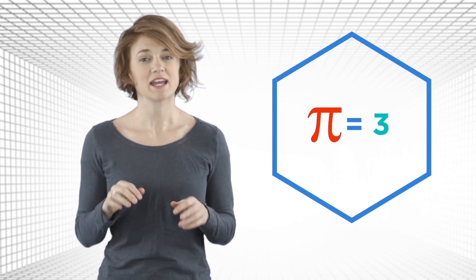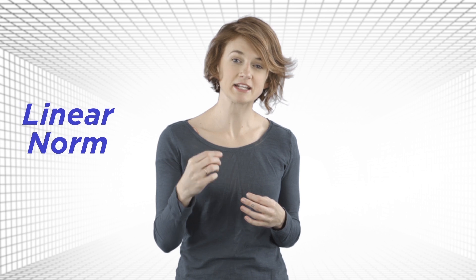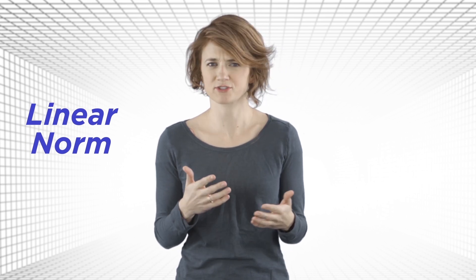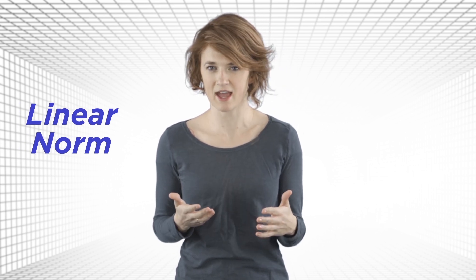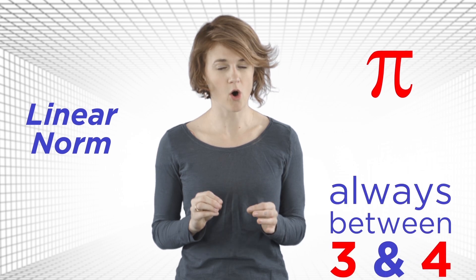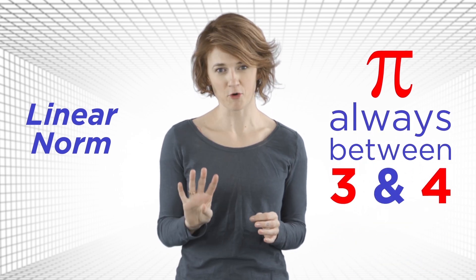In fact, it's a theorem that, for metrics given by a linear norm, which is a technical term for the kind of metrics we've been looking at, the value of pi is always between 3 and 4, inclusive.